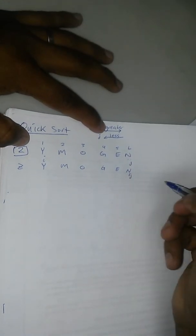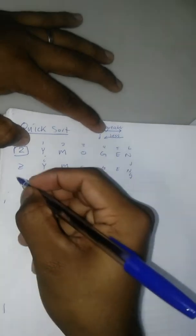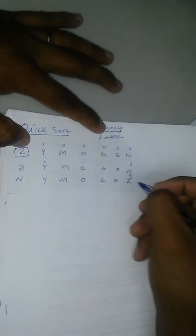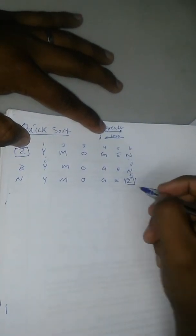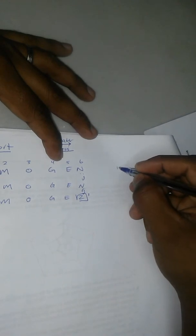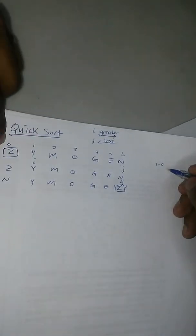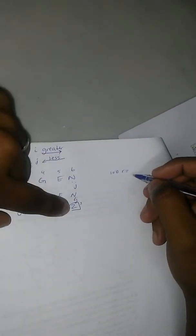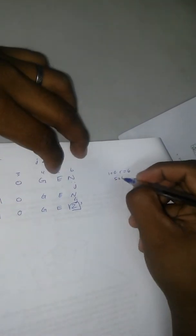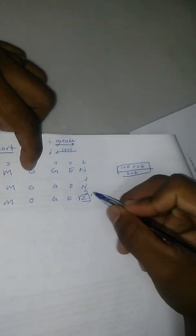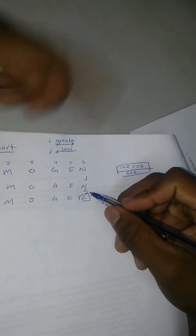J stays where it belongs and this is where we make the first swap. So we have N, Y, M, O, G, E, Z. Since this is our first swap, this is the stationary point of Z now — it's not going to move from here. Keep in mind that the swap occurs where J is, or where J was.